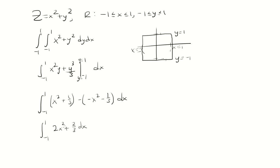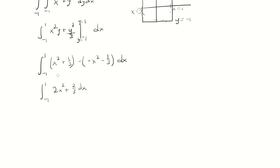And so we find the antiderivative of 2x squared. So that's going to be 2x cubed over 3, and then the antiderivative of 2 thirds is 2 thirds x. Evaluate this from negative 1 to 1.